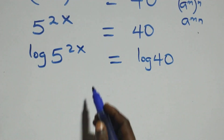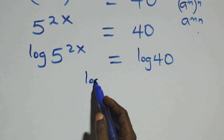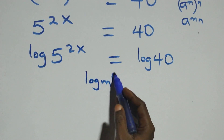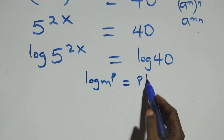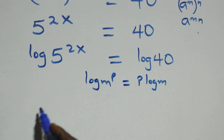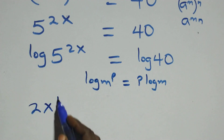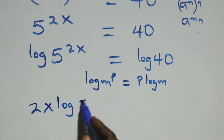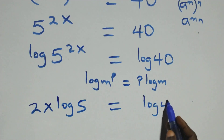The next step, we apply the power rule of logarithms. When we have log of n raised to power p, this is the same thing as p times log n. So what we have here becomes 2x log 5 equals log 40.